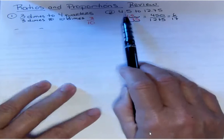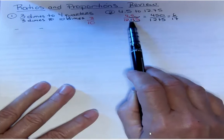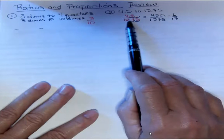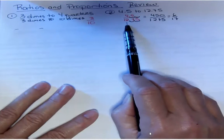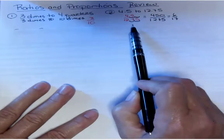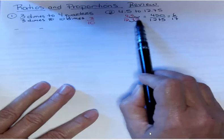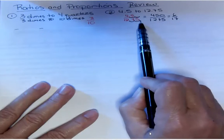Then over here on the second one I have 4.5 to 12.75. Since 4.5 went first, that went on the top, and then 12.75 went on the bottom. Since I have decimals inside of fractions, I need to move that decimal, so I moved it two places.